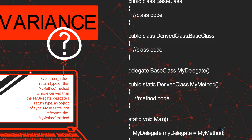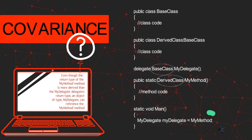So what does this mean? The C# language allows for the developer to have a little bit of design flexibility when it comes to a delegate's compatibility with a method. Covariance and contravariance provide flexibility when matching a delegate definition with a method definition.